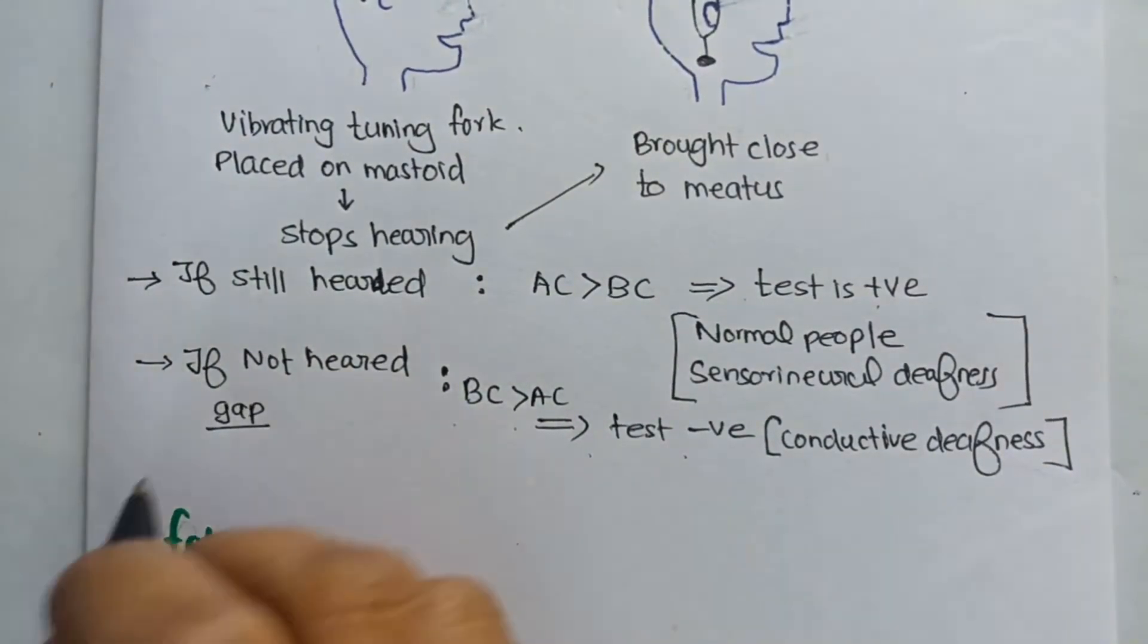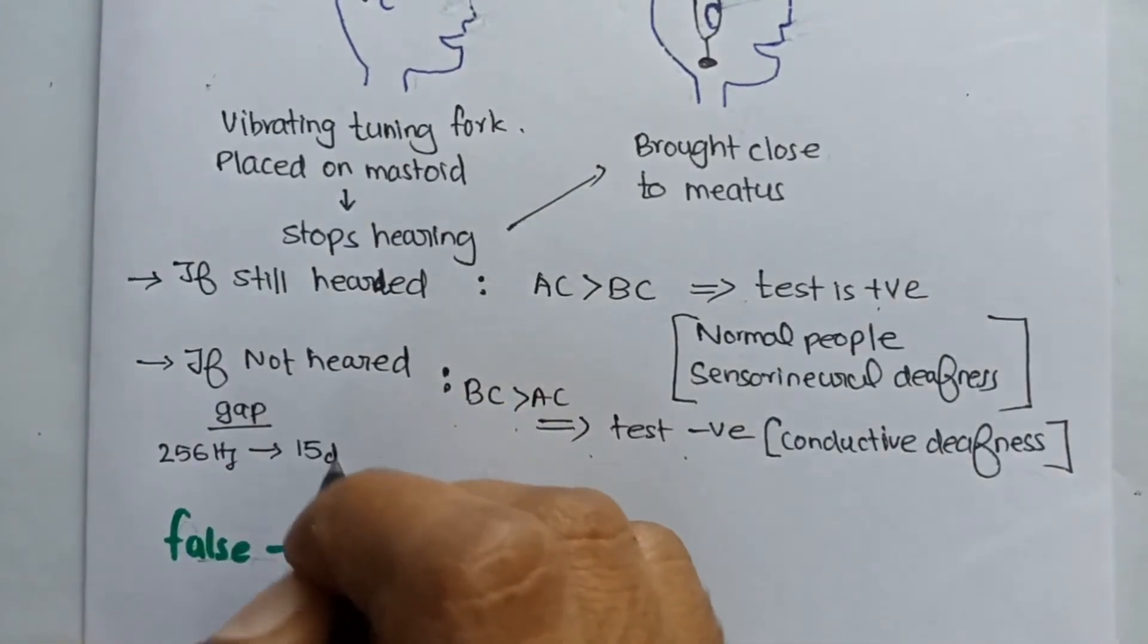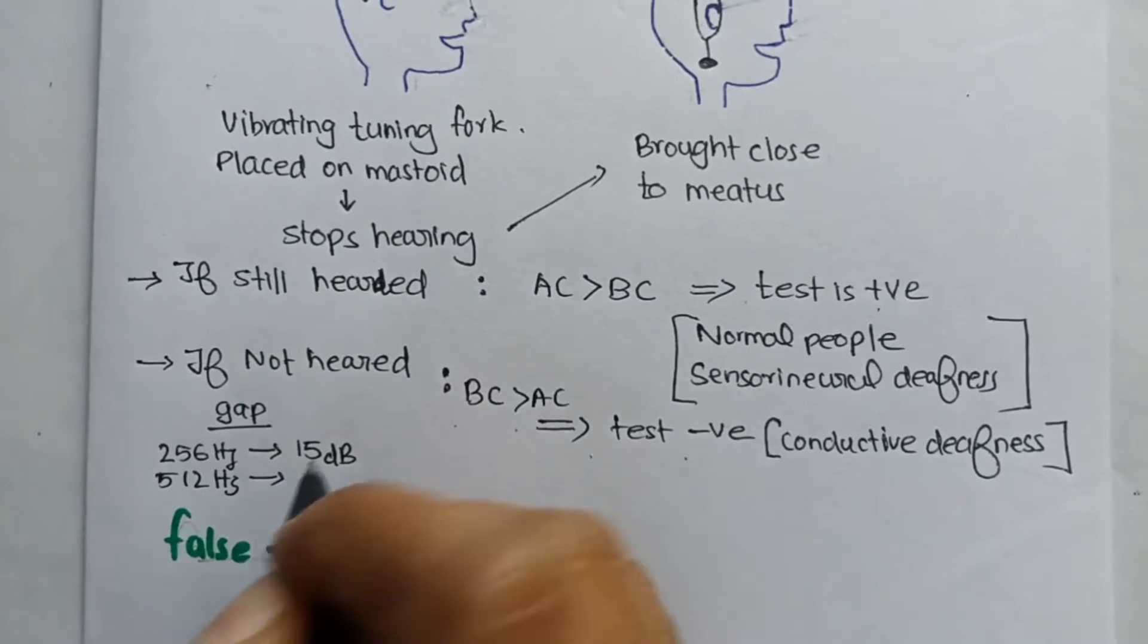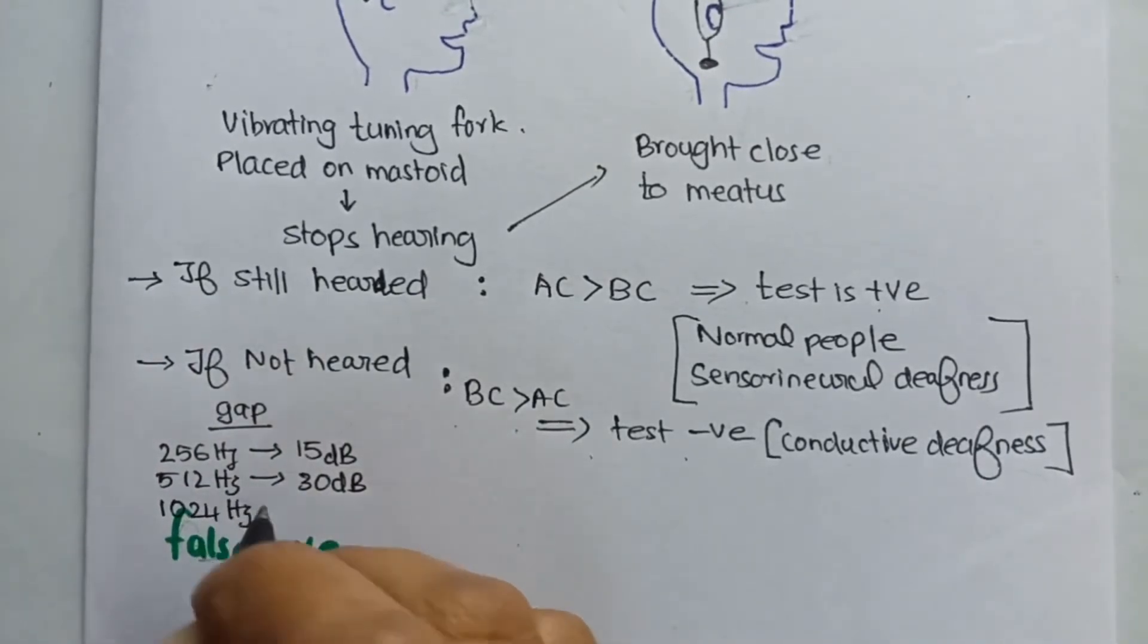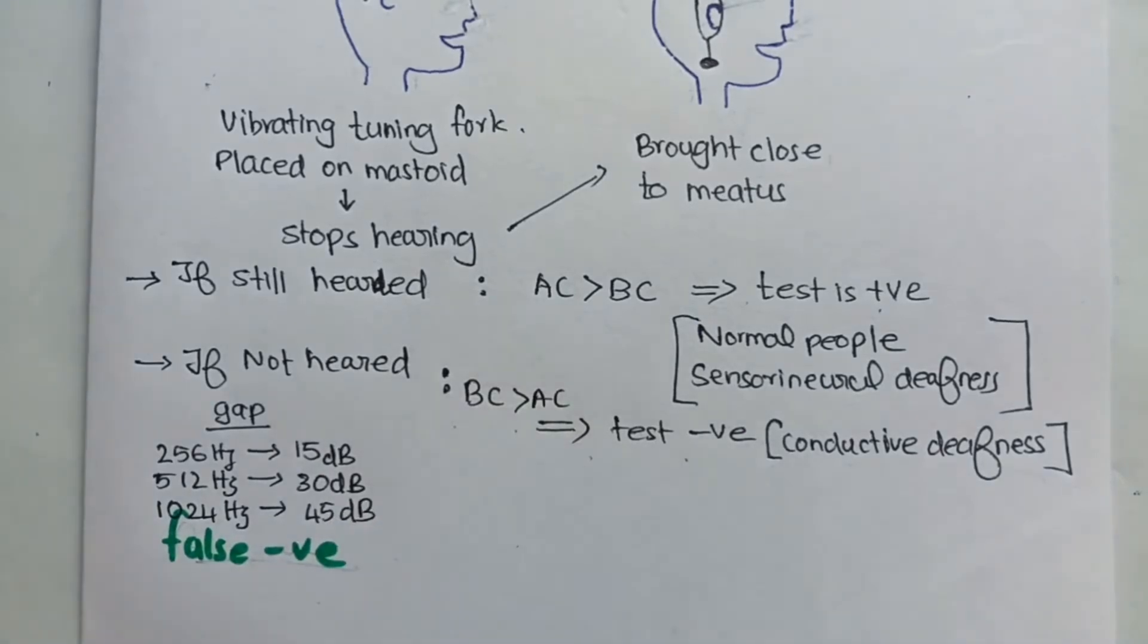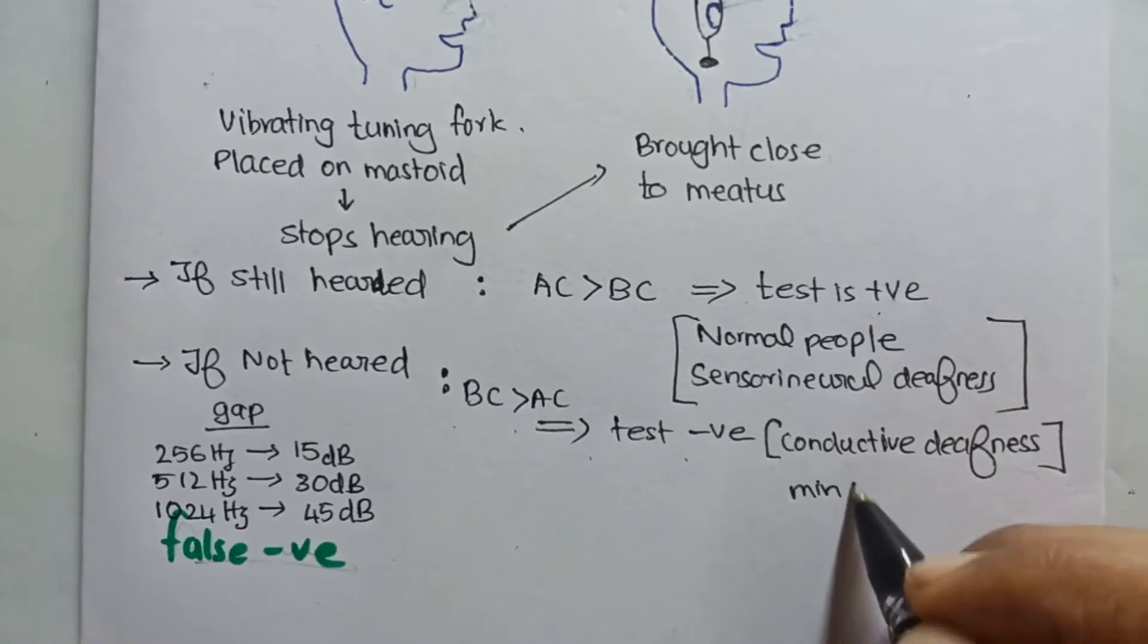A rough calculation can be made about the gap between both based on the tuning fork. If it is 256 hertz tuning fork, a 15 decibel gap; 512 hertz means 30 decibel; and 1024 hertz implies 45 decibel of gap.